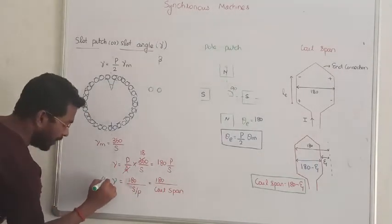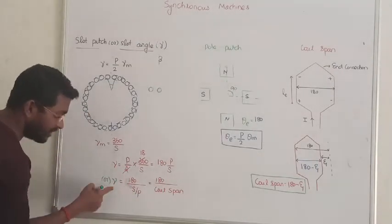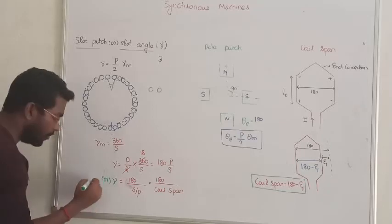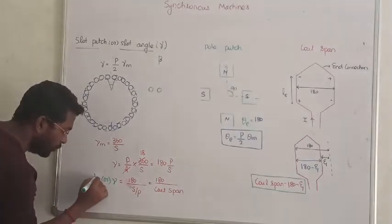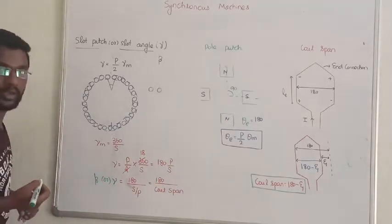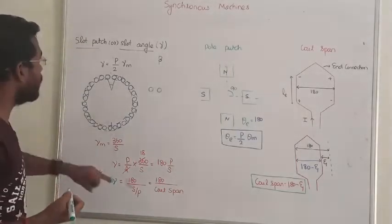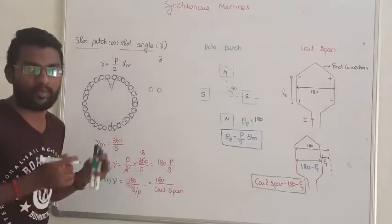So the formula is gamma equals 180 divided by the number of slots per pole. Sometimes in your exam, instead of using gamma, they might also use beta. That is all about the slot angle — which represents the phase difference between consecutive slots.